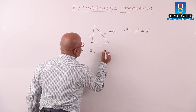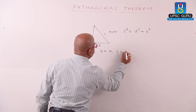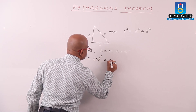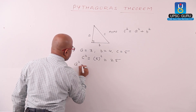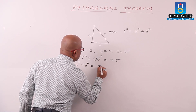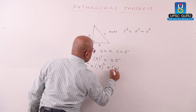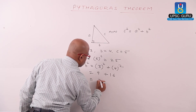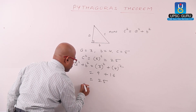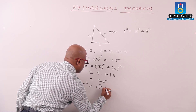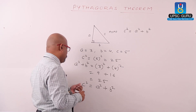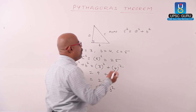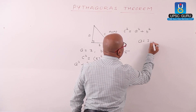For example, let us consider a equals 3, b equals 4, and c equals 5. Now c squared equals 5 squared, that is 25. A squared plus b squared is 3 squared plus 4 squared, that is 9 plus 16, which equals 25. Therefore c squared equals a squared plus b squared — that means hypotenuse squared equals the sum of the squares of the other two sides.